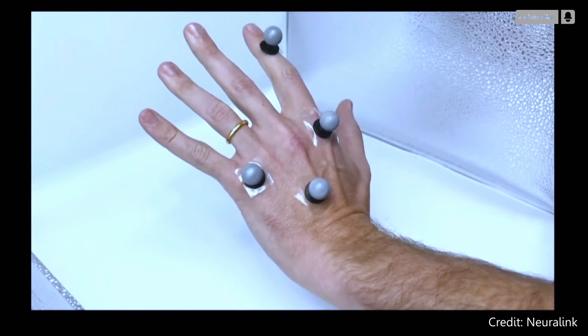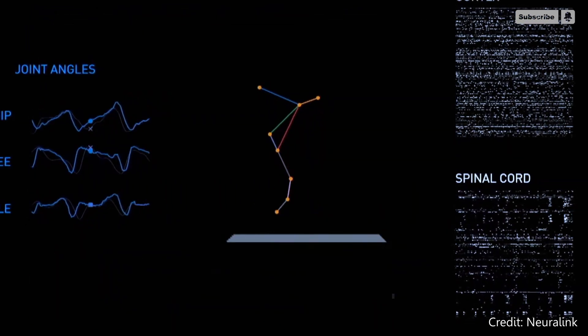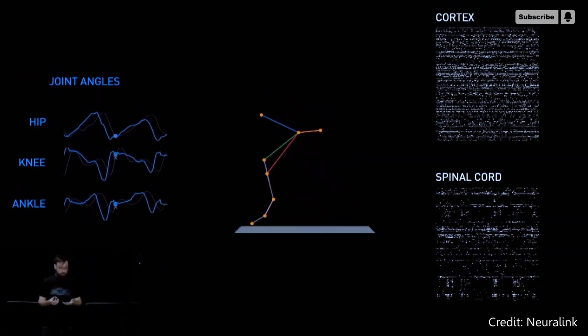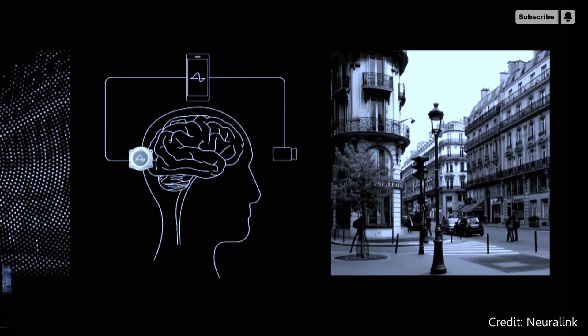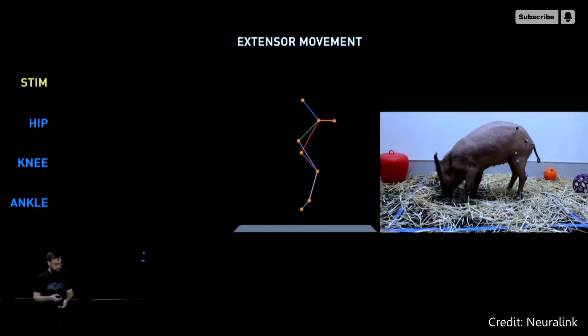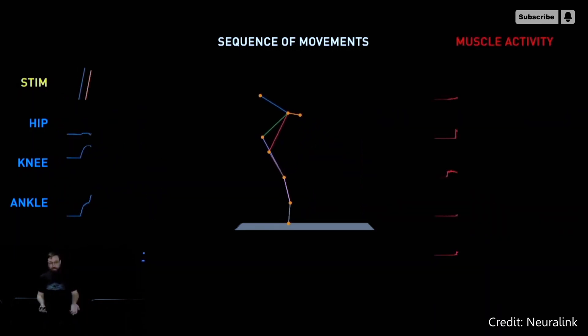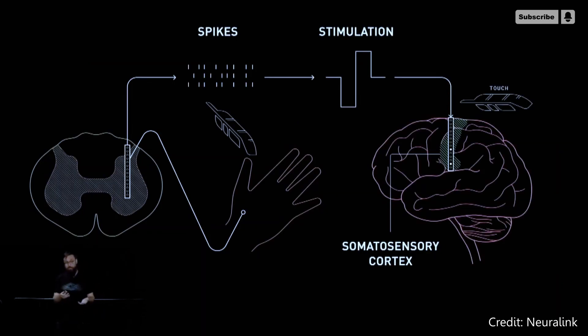He said that Neuralink has prioritized upgradability from the N1 brain-computer interface device to allow humans to easily enjoy new features as they become available. Elon Musk claims that Neuralink can restore vision, even for a person who is born blind. Additionally, the company is confident that the Neuralink device will be able to fully restore movement and functionality to quadriplegics by repairing the communication pathways of their nerves throughout the spinal cord.